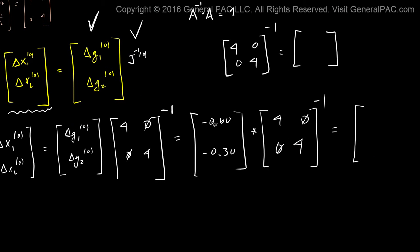Now according to the book, if we take this matrix here and we multiply by the inverse of this matrix there, then we should get a value of negative 0.150 and negative 0.075.